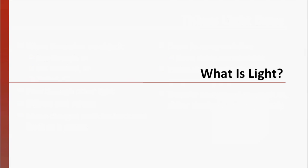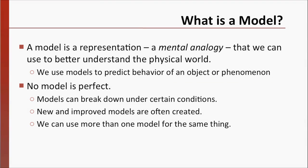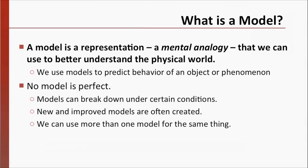These observations can help us create a model for light. When we talk about what light is, what we are really doing is creating a model. A model in physics is a representation, a mental analogy that we can use to better understand the physical world.